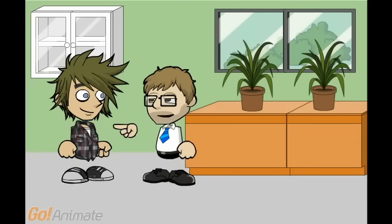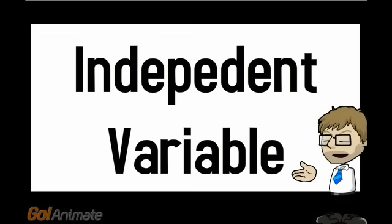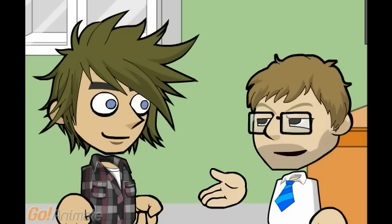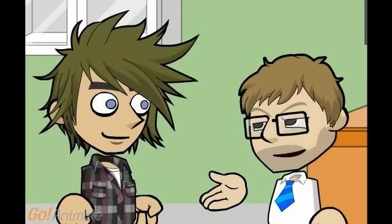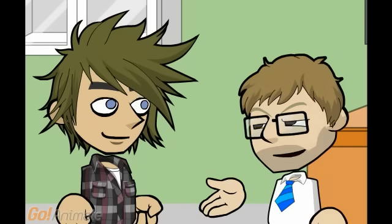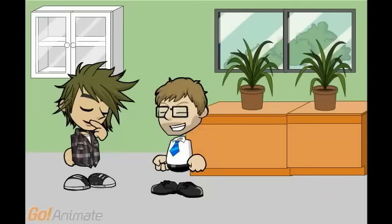You got it, buddy. In order for an experiment to be fair, you can only change one thing at a time. Everything else in the experiment should stay the same. The thing that you change is called the independent variable. In order for a test to be fair, you must always only have one independent variable. And remember, that's the thing that you're going to change. In our case, it was the amount of water that the plants received.